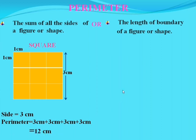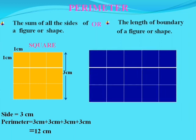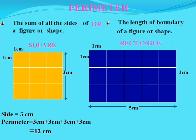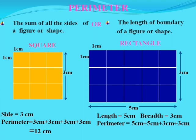Now take an example of a rectangle which has many squares in it, and each square has a side of 1 centimeter. So the length of this rectangle is 5 centimeters and the breadth is 3 centimeters. So the perimeter of this rectangle is 5 cm plus 5 cm plus 3 cm plus 3 cm — that is the sum of all the sides — which becomes 16 centimeters.